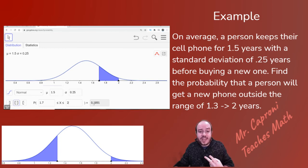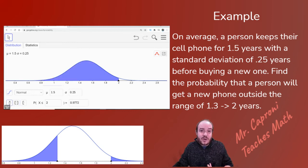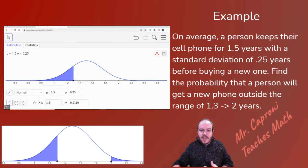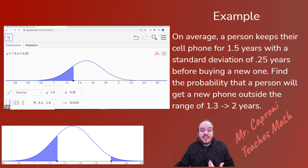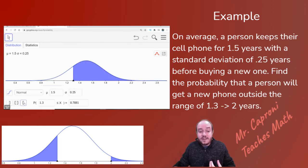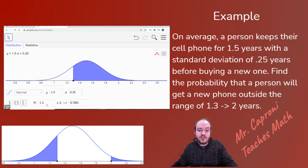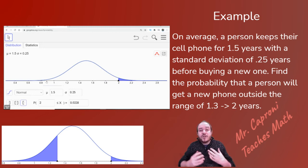You could either shade to the left and go ahead and find that answer. So we would shade to the left of 1.3. And that tells us 21.19%. And then we can go ahead and shade to the right of the two. So we actually already had that answer from before. But let's go ahead and put it in again. And that gives us the 0.028 that we are used to. So we could take those two and add them together.